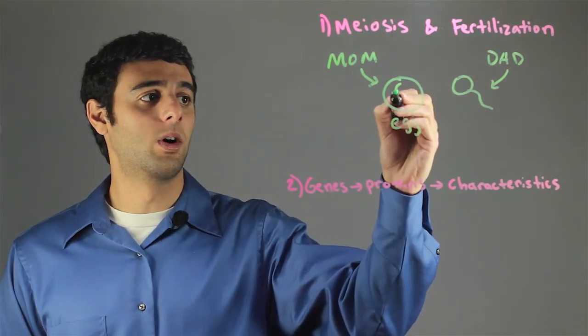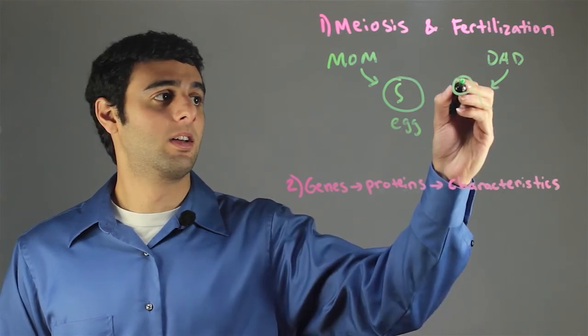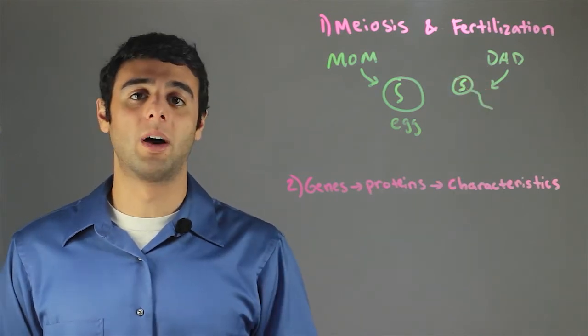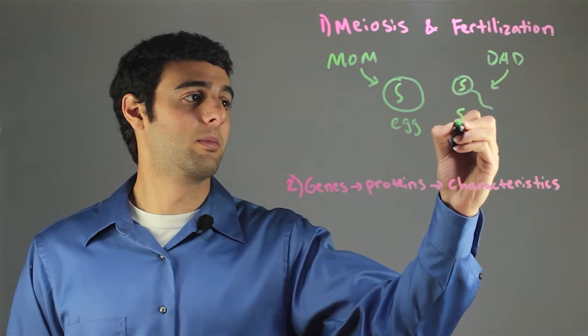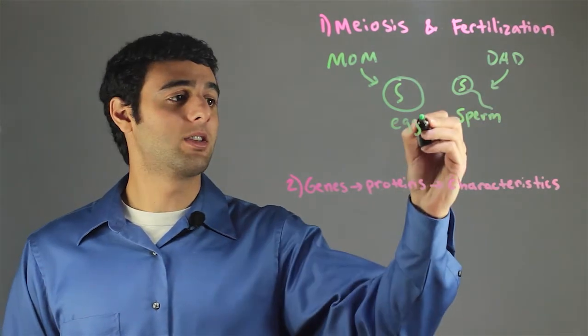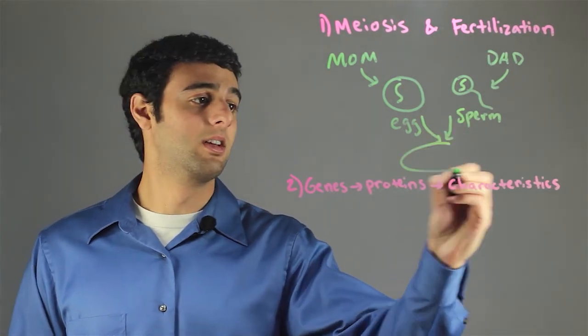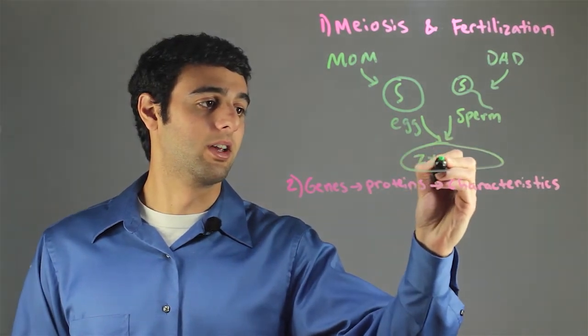The egg has one copy of every gene of the mom, and the sperm has one copy of every gene from the dad. The egg and the sperm then fertilize to make a zygote.